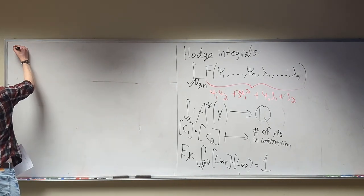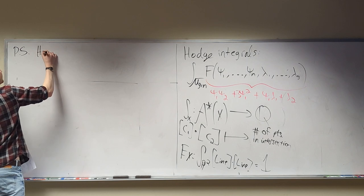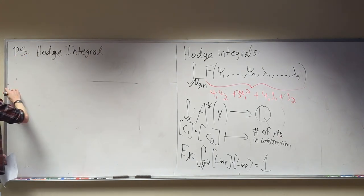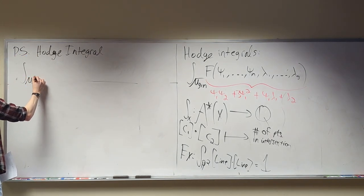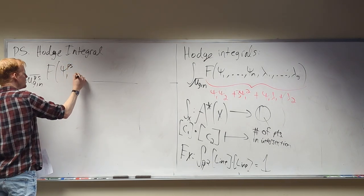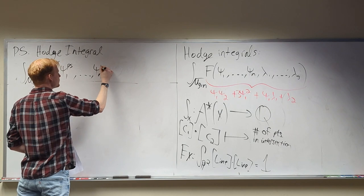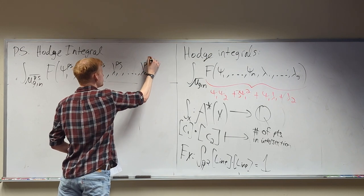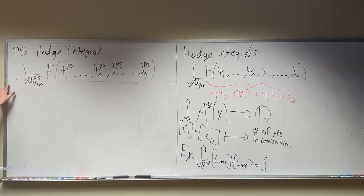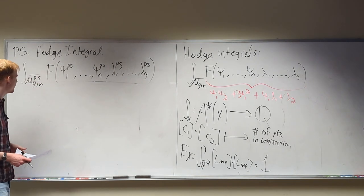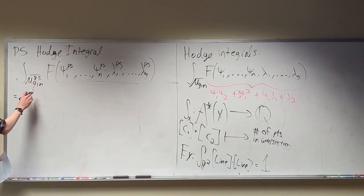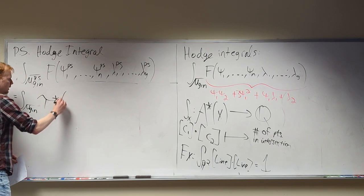A pseudo-stable Hodge integral is defined the exact same way but over the moduli space of pseudo-stable curves, and we have pseudo-stable psi classes and pseudo-stable lambda classes. For computing these, we use our pullback ring homomorphism. The same authors showed that all pseudo-stable Hodge integrals are equal to their stable counterpart after you pull them back.